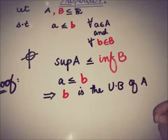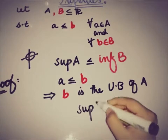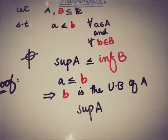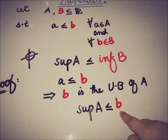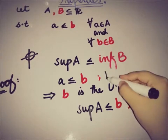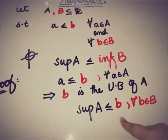So sup(A) must be less than or equal to the upper bound b. Now, this inequality holds for all b in the set B, since we assumed a ≤ b is true for all a in A and for all b in B.